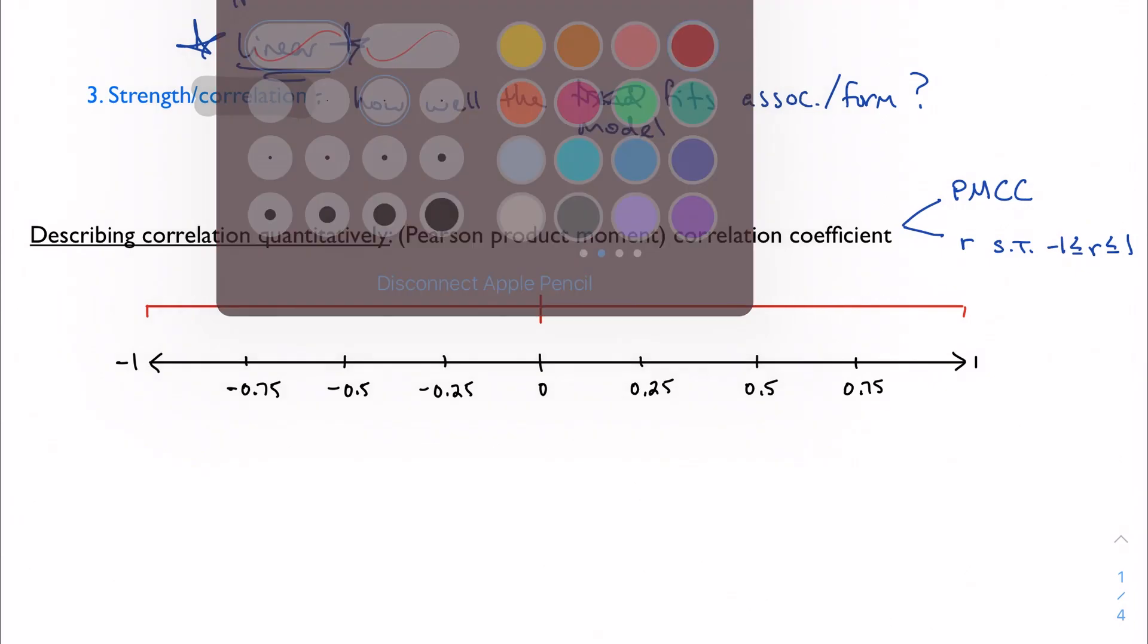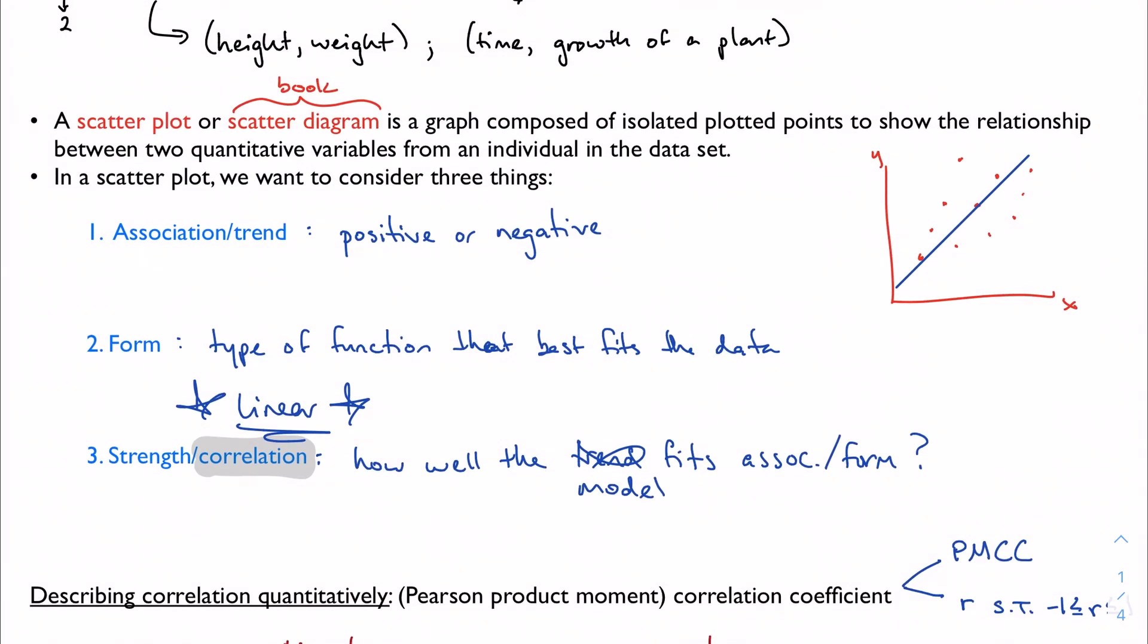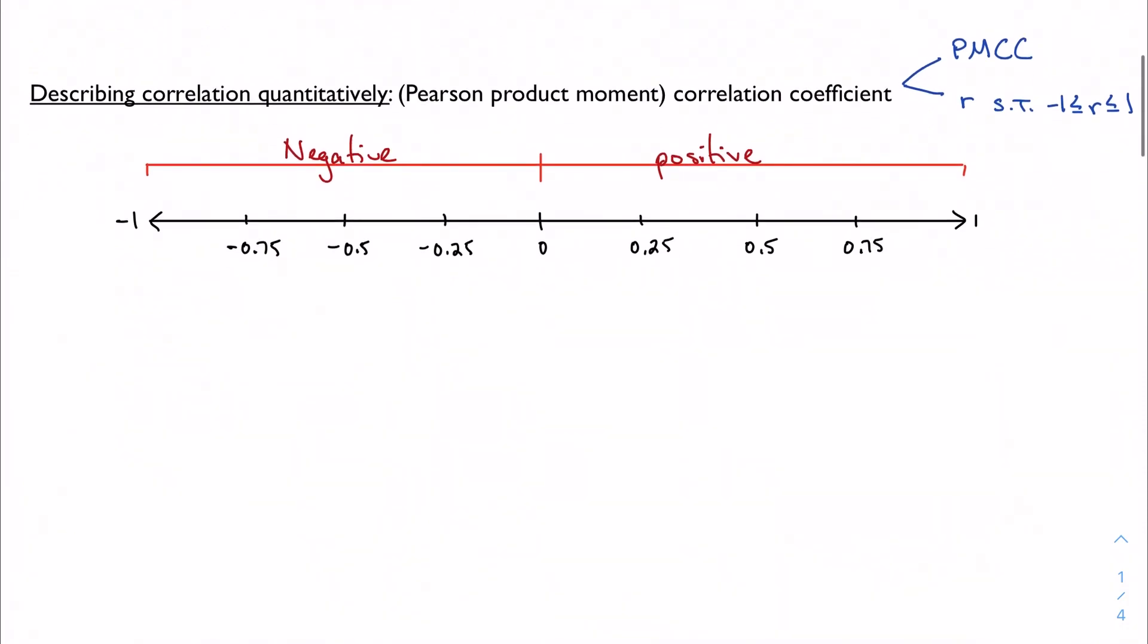We can split up R in a number of different ways. Obviously R can be either negative or positive because I can have either a positive or a negative correlation. If R is between 0.75 and 1, then we would call this a strong correlation, regardless of the sign.